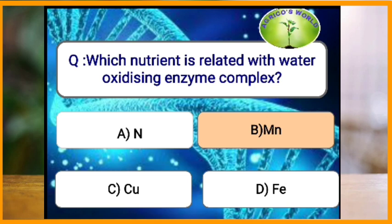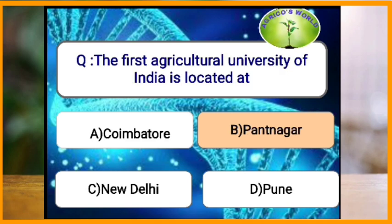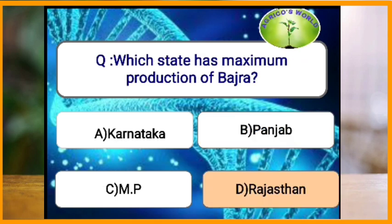Which nutrient is related to the water oxidizing enzyme complex? Manganese is the element related to the water oxidizing enzyme complex. The first agricultural university of India is located at Pantnagar, established in the year 1960. Rajasthan is the state which has maximum production of bajra.